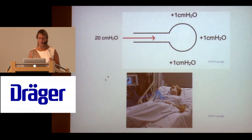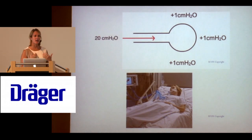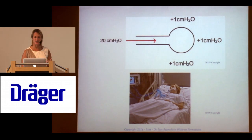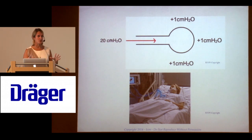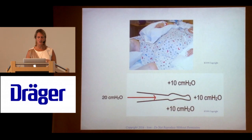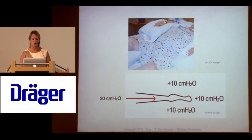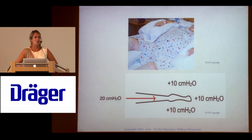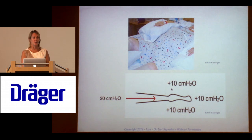For example, 20 centimeters applied to a thin patient with little chest wall edema who's spontaneously breathing is more than enough pressure. But that same 20 centimeters on an obese patient lying flat, not spontaneously breathing — where abdominal contents encroach into the thorax — is not going to open that lung. So I'll need to increase that airway pressure.